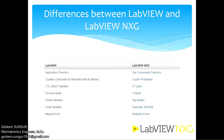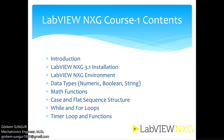There are some differences between LabVIEW and LabVIEW NXG with programmatic features. I will mention these features in the next videos, but I will briefly explain them now. There is getComponentDirectory instead of ApplicationDirectory, clusterProperties instead of UnbundleByName and BundleByName, gTypes instead of StrictTypeDefinitionControls, cNode instead of FormulaNode, techNodes instead of GlobalVariables, duplicateTerminals instead of LocalVariable, and multiplexError instead of MergeErrors.